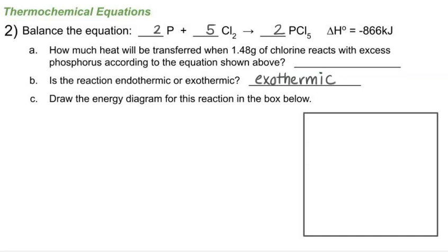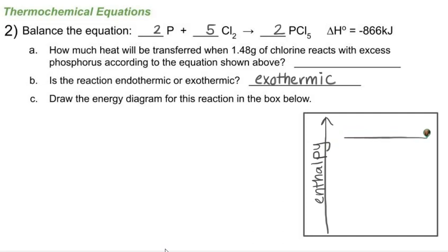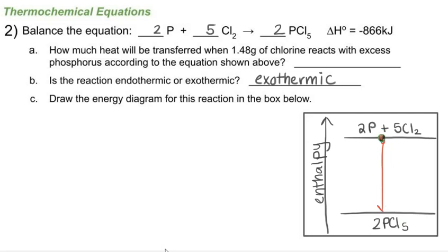I'll sketch the energy diagram for this exothermic reaction. On the y-axis we have increasing enthalpy. The reactants — two phosphorous and five Cl₂ — are at a higher energy, and the products — two PCl₅ — are at a lower energy. Energy is given off during the reaction, so delta H = −866 kilojoules.